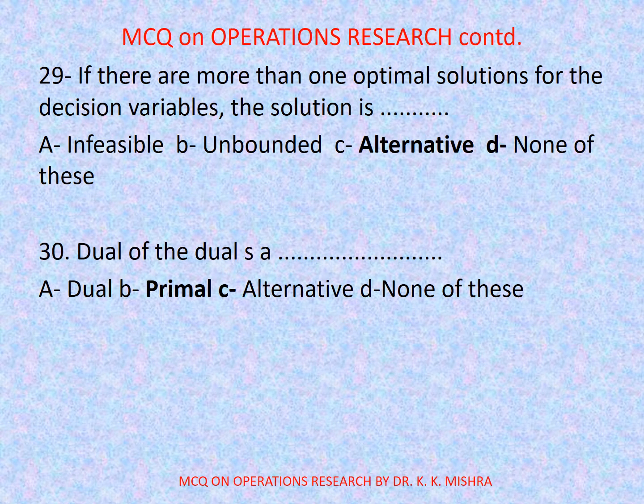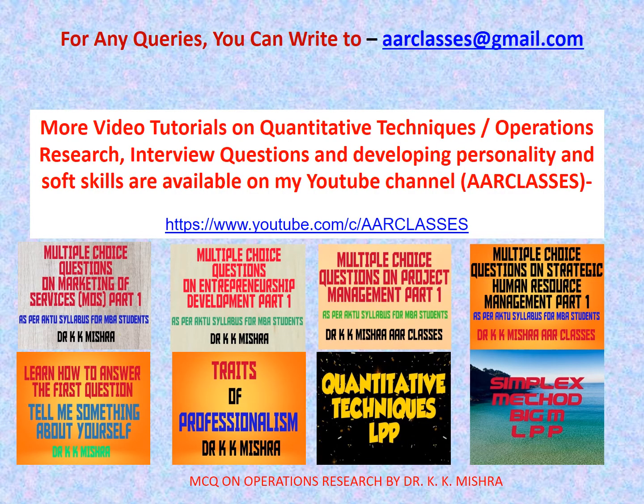Question number 29: If there are more than one optimal solutions for the decision variables, the solution is — options are: A. Infeasible, B. Unbounded, C. Alternative, D. None of these. Correct option is C: Alternative. Question number 30: The dual of the dual is — options are: A. Dual, B. Primal, C. Alternative, D. None of these. Correct option is B: Primal. So this was all about this video tutorial on operations research; I hope that you have liked it.